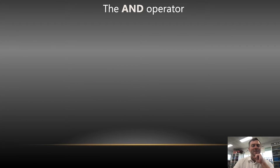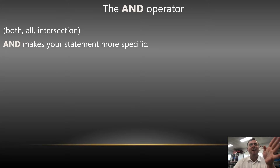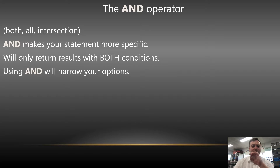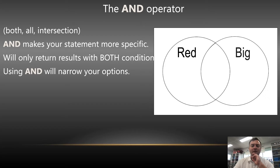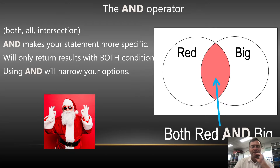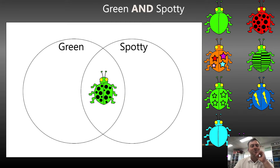So the AND operator covers all the intersections — AND makes your statements way more specific. It needs to be this AND this. It will only return results if both conditions are true, so using AND narrows your options down. So if it's red and big, it's that little Vesica Piscis in the middle, that overlap — that would be Santa. If we said green and spotty, there's only one thing that is green and spotty — see how that narrows the options you have available to you.